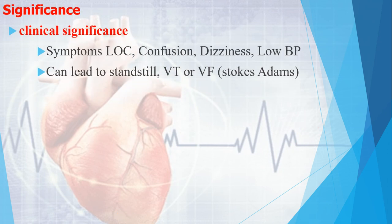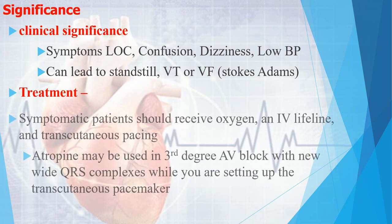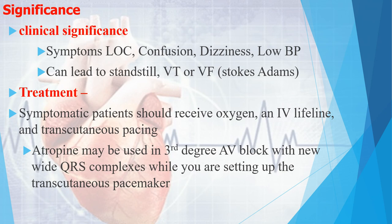Clinical significance: patients present with loss of consciousness, confusion, dizziness, and low blood pressure. It can lead to cardiac standstill, ventricular tachycardia, or ventricular fibrillation. Treatment: symptomatic patients should receive oxygen, IV access, and transcutaneous pacing. Atropine may be used in third degree heart block with narrow QRS complexes. The main management is pacemaker therapy.